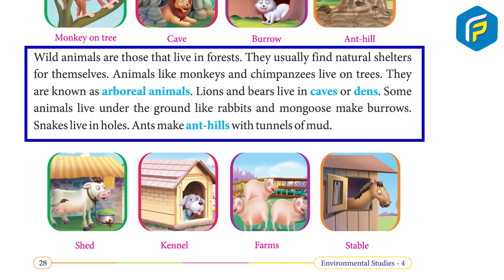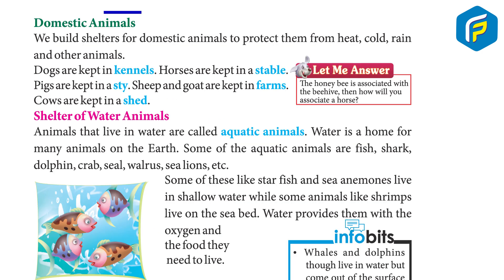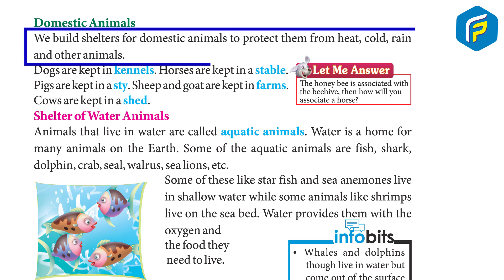Lions and bears live in caves or dens. Some animals live under the ground — rabbits and mongooses make burrows. Snakes live in holes. Ants make anthills with tunnels of mud.